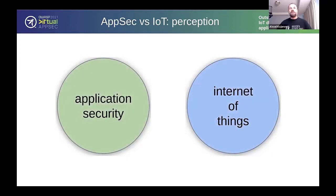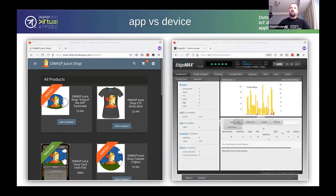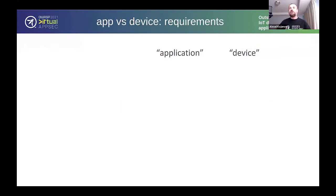A lot of people think that application security and IoT are two separate domains with nothing in common. But is that really the case? Consider this screenshot — this is a web application in my browser. Many of you might know this is Juice Shop, which is pretty awesome. And on another screenshot there is also a web application in the browser, but it's coming from a tiny device which happens to be my home router. For the end user, is there really a difference between the two? Both show up in the browser, both serve HTML and JavaScript.